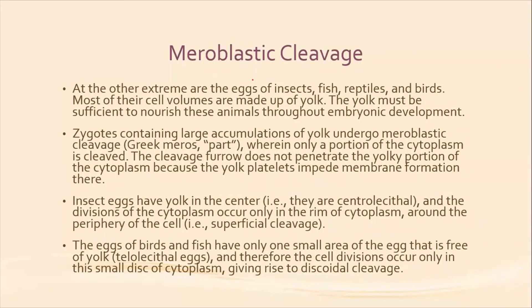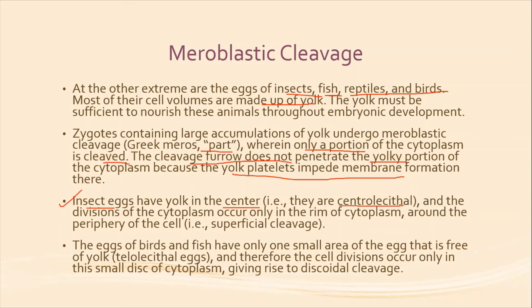The next type is meroblastic cleavage. At the other extreme are the eggs of insects, fish, reptiles, and birds. Most of their cell volume is made up of yolk, which must be sufficient to nourish the animals throughout embryonic development. Zygotes in this case undergo meroblastic cleavage — 'mero' means part — where only a portion of the cytoplasm is cleaved. The cleavage furrow does not penetrate the yolky portion of the cytoplasm, because the yolk platelets impede membrane formation there. In the insect egg, the yolk is present at the center; these are centrolecithal eggs, and division occurs only at the rim of the cytoplasm — at the periphery of the cell — known as superficial cleavage.